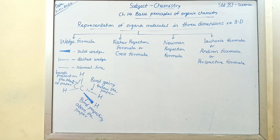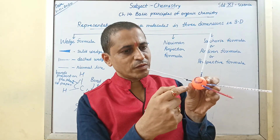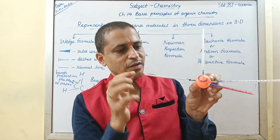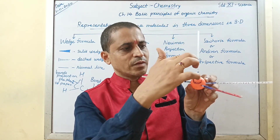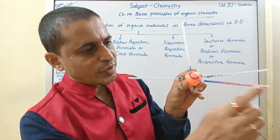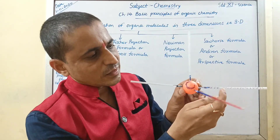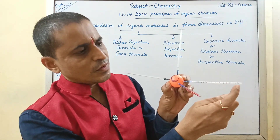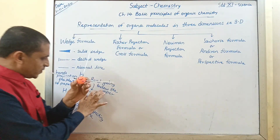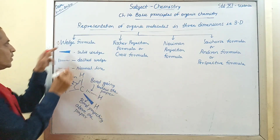I have one model. This is the carbon atom and these are the bonds which are connected to four hydrogen atoms. These are the normal lines — they are present on the plane of paper. This solid wedge bond projects above the plane of paper. And this dash wedge bond goes below the paper. I hope you understood the wedge formula, that is the first method.